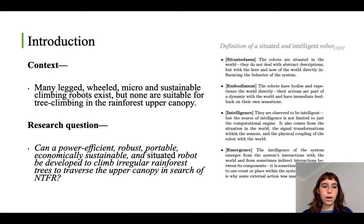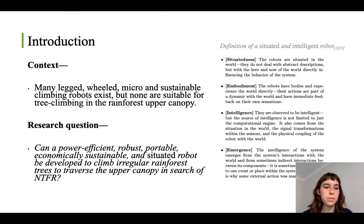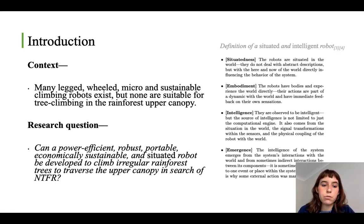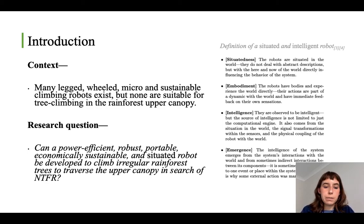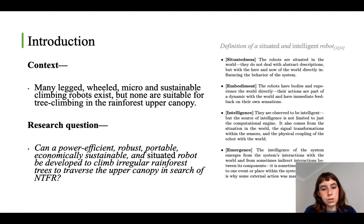I carried out a literature review into the different types of climbing robots that exist and realized that none of them were suitable for this specific application. So the research question I came up with was: can a power-efficient, robust, portable, economically sustainable, and situated robot be developed to climb irregular rainforest trees to traverse the upper canopy in search of non-timber forest resources?